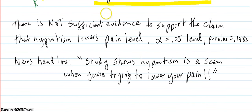So the way you word it is that way mathematically. And then in words, you put there is not sufficient evidence to support the claim that hypnotism lowers pain level at the alpha 0.05 level, p-value is 0.1482.